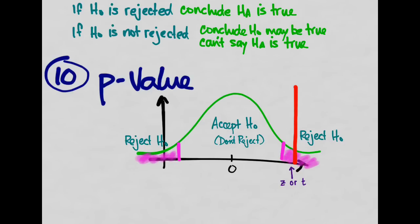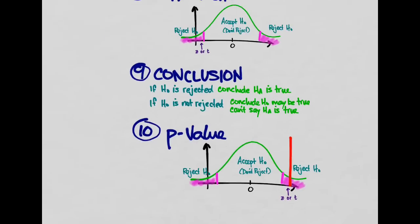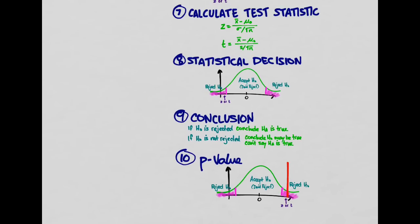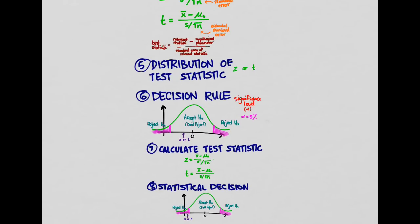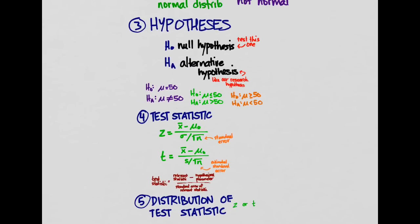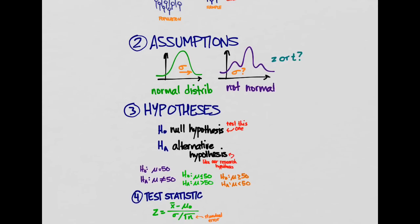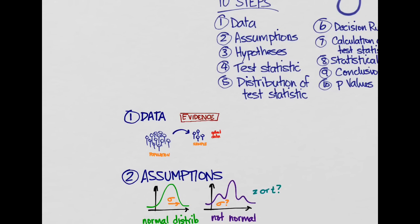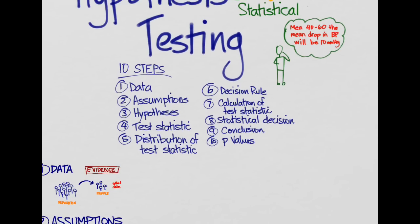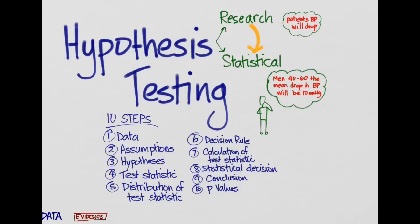Those are the 10 steps of hypothesis testing. There are 10 steps and it does look like a lot, but many of them are very simple. We're going to go through all of this in an example when we continue on with hypothesis testing. Hopefully this makes sense.